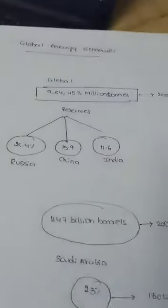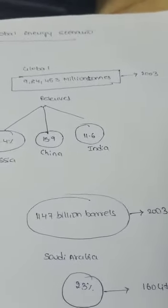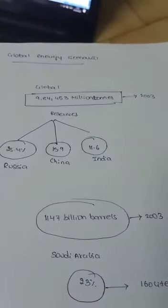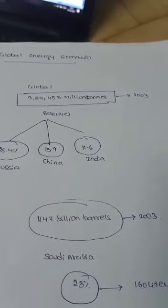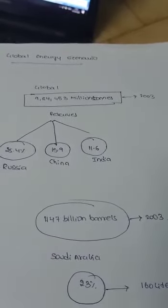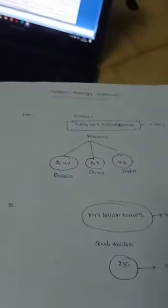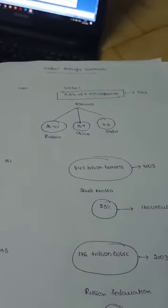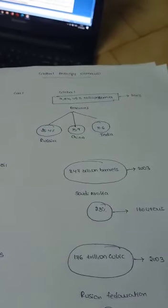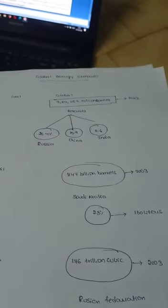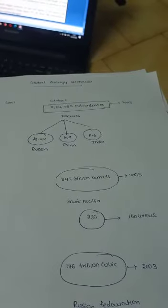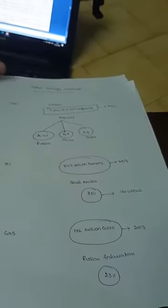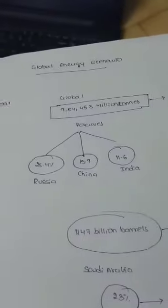When we discuss the Indian and global scenario, key numbers come into the picture. According to global data for the year 2003, 984 lakh 453 million tons of coal was reserved globally. Russia holds about 25.4 percent, China about 15.9 percent, and India about 11.6 percent. For oil, 1147 billion barrels were reserved in 2003, with Saudi Arabia holding about 23 percent. For natural gas, 176 trillion cubic meters were reserved in 2003, with Russia holding about 23 percent.